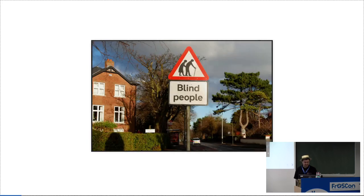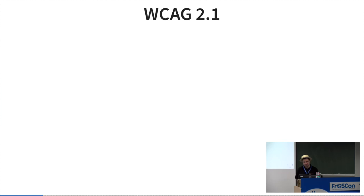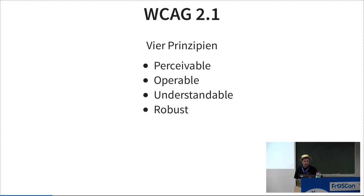There are a few standards. The most important are the Web Content Accessibility Guidelines, available in version 2.1 since last year. They are organized into four principles: perceivable, operable, understandable, and robust.